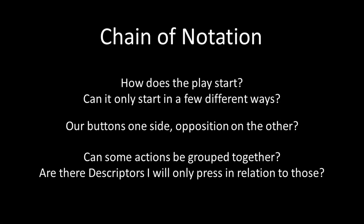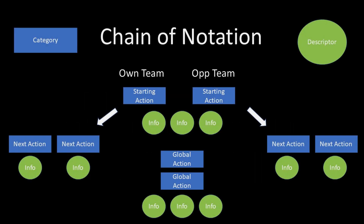Think of the chain of notation for what you want to register. How often do things happen in your sport? Are there actions which always start to play? Are you looking at actions for yourself and your opposition? Are there descriptors which you would only press after certain categories? This understanding can help you to place your buttons better in the template to speed up your registering of actions. Put actions that follow each other close together in the template. Put actions that happen most often at the top or middle of your template, with other actions as buttons that can branch out from these in the natural chain of notation.